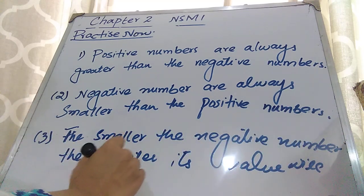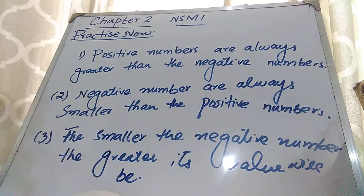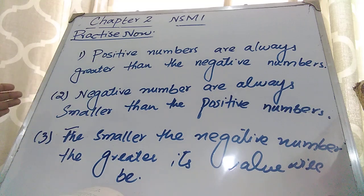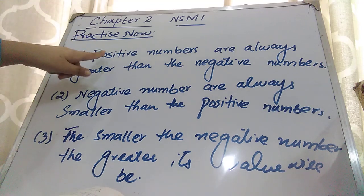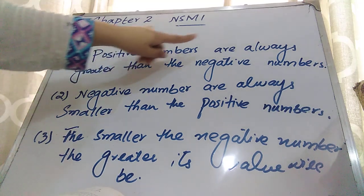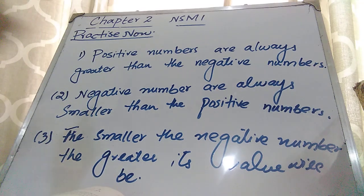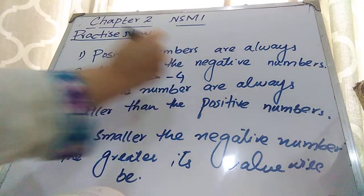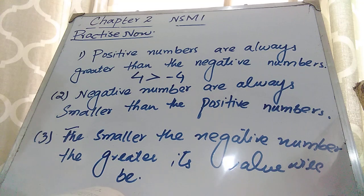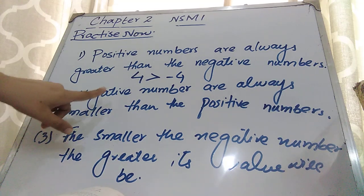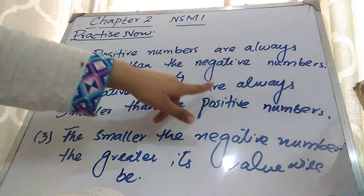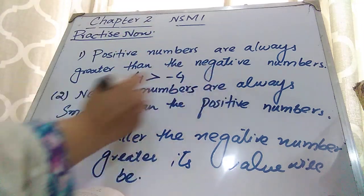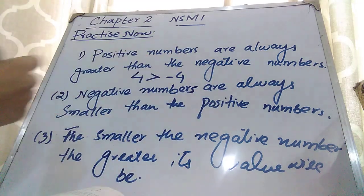Now I will explain these three points with examples. As I told you, positive numbers are always greater than negative numbers. So 4 will be greater than minus 4.